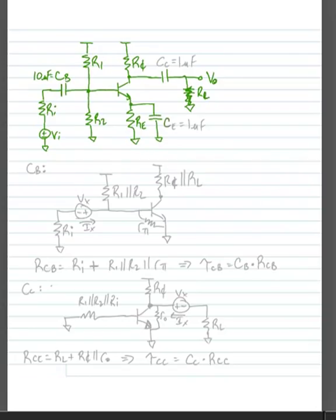We're going to bypass the emitter resistance with a capacitor CE, which we'll say is equal to 1 microfarad, again very large. We'll put a DC block between the collector and the output using a capacitor CC, which will have a value also of 1 microfarad.